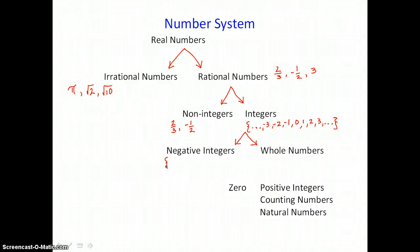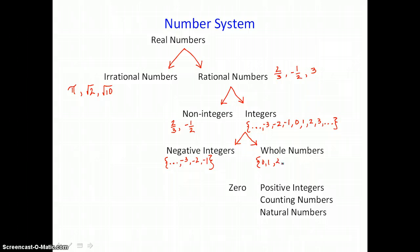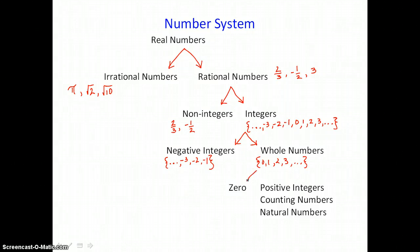Negative integers using set notation would look like this: negative three, negative two. Negative one is going to be the largest negative integer. Zero is going to be the smallest whole number. Whole numbers can be divided into two groups: zero and the counting numbers. The counting numbers are the positive integers, and they're also called the natural numbers.